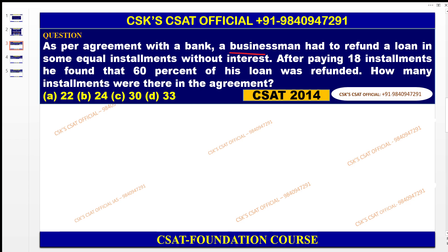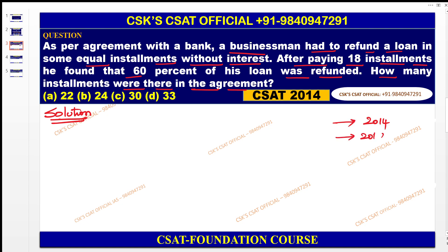The first question: as per the agreement with a bank, a businessman had to refund a loan in some equal installments without interest. Read the question carefully — after paying 18 installments he found that 60 percent of his loan was refunded. How many installments were there in the agreement? This is an important question that appeared in both 2014 and 2018 — the same question repeated in two years.